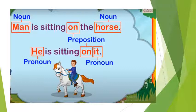You can see that man is a noun whereas on is a preposition. Horse is a noun. He and it are pronouns. So prepositions have connected nouns with pronouns.